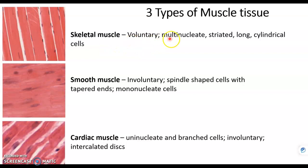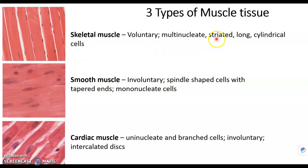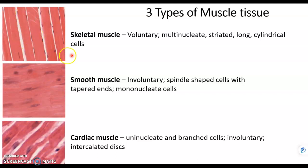Skeletal muscle is multi-nucleate, meaning each muscle cell, which we call a fiber, has more than one nucleus. It's striated, meaning it has a striped appearance, and these are long cylindrical cells. Skeletal muscle is the only type of muscle tissue that is voluntary.